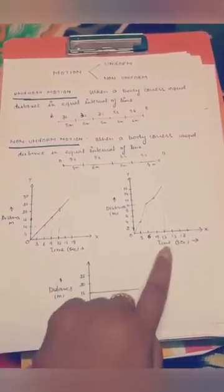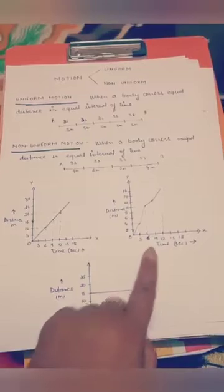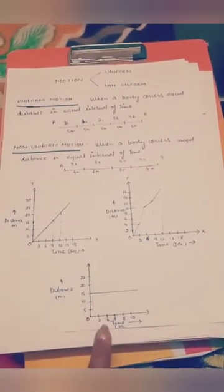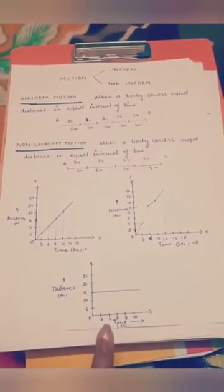See, this is the body at rest. This is a graph for uniform motion, non-uniform motion, a curved line, a line parallel to the x-axis will be showing the body is at rest.